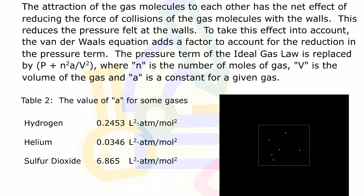The pressure term of the Ideal Gas Law is replaced by P plus n squared a divided by V squared, where n is the number of moles of gas, V is the volume of the gas, and a is a constant for a given gas.